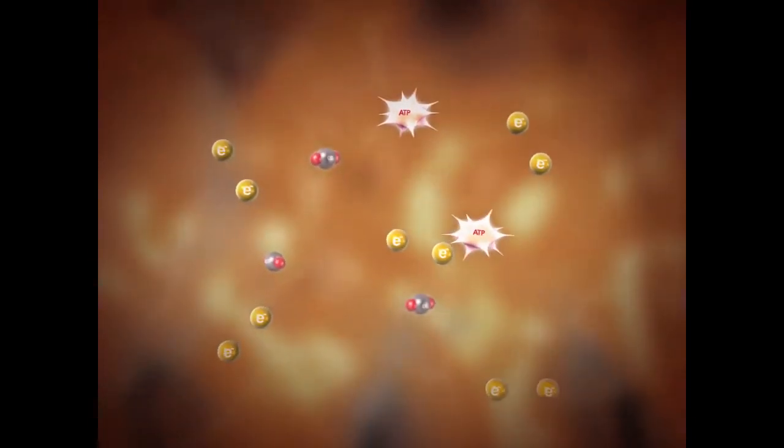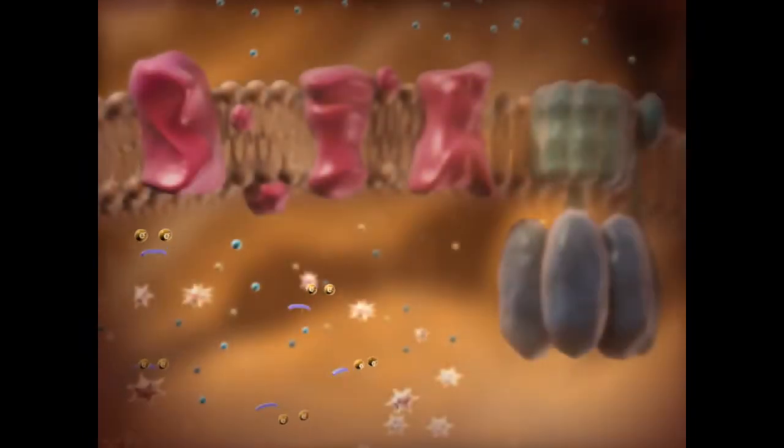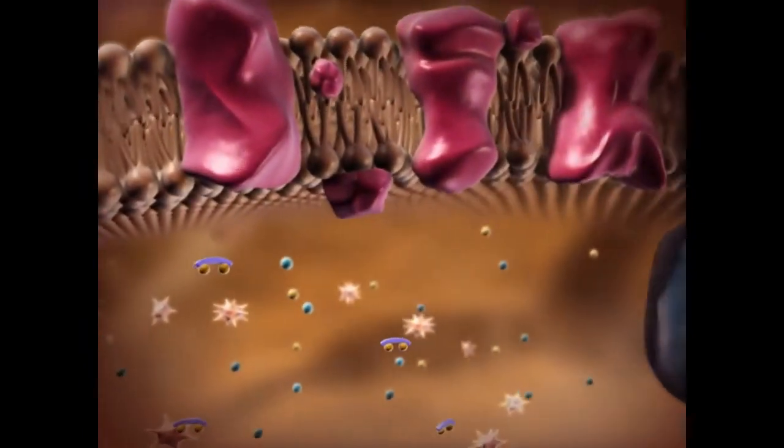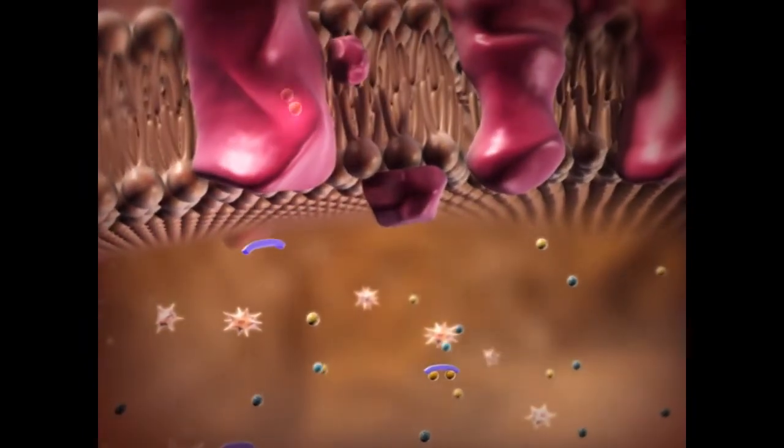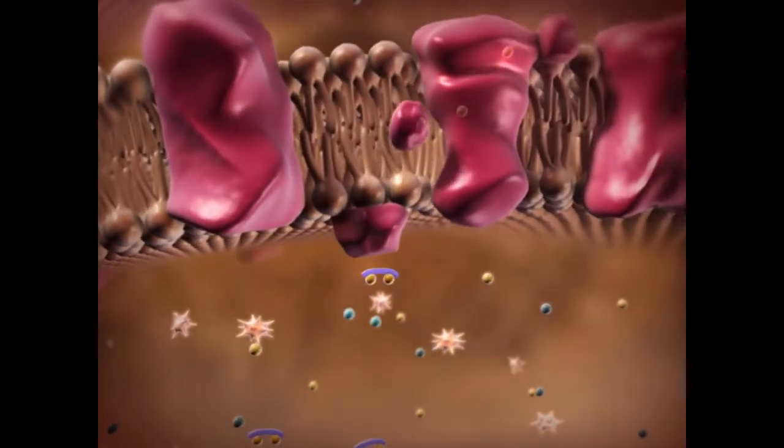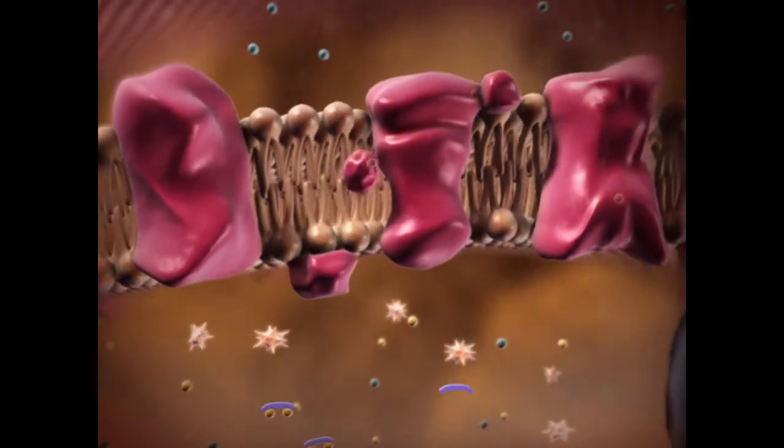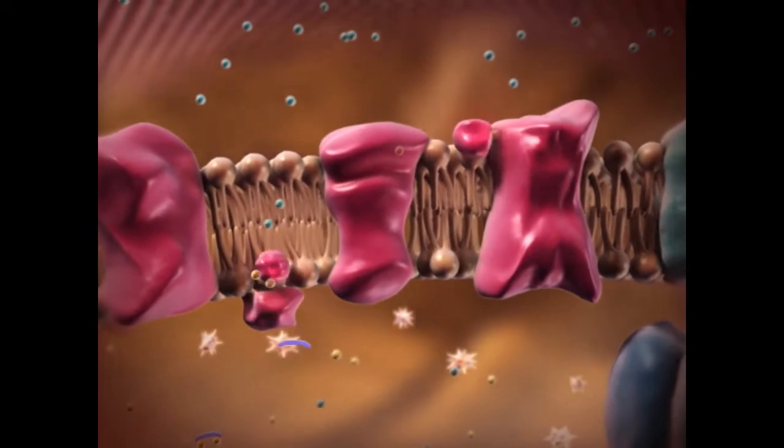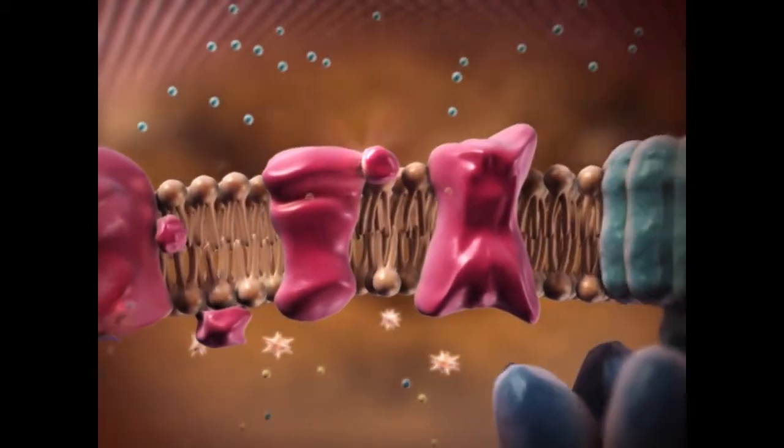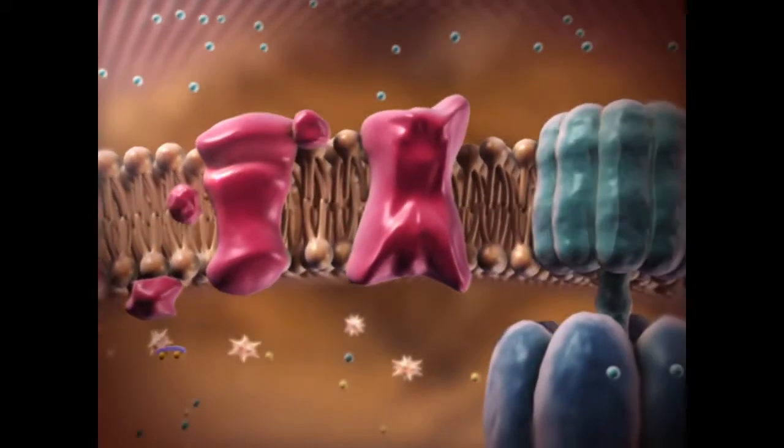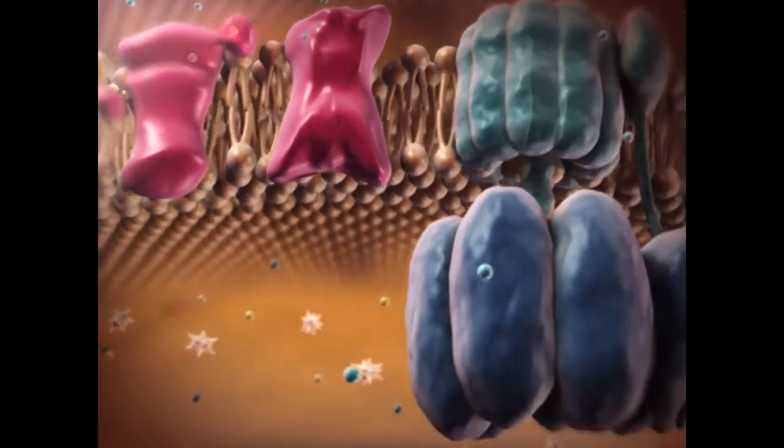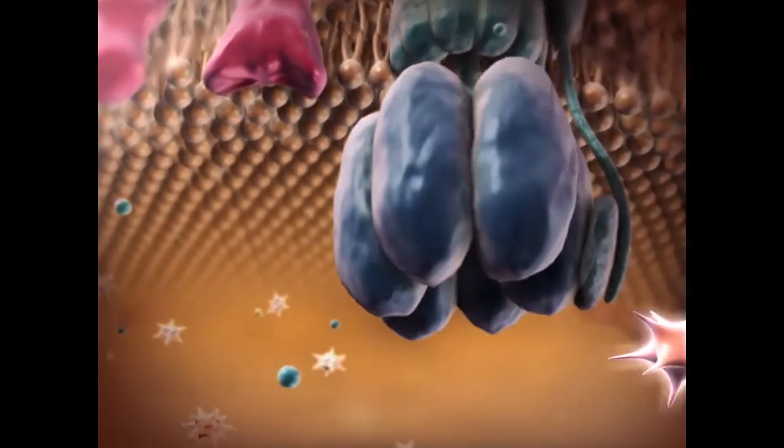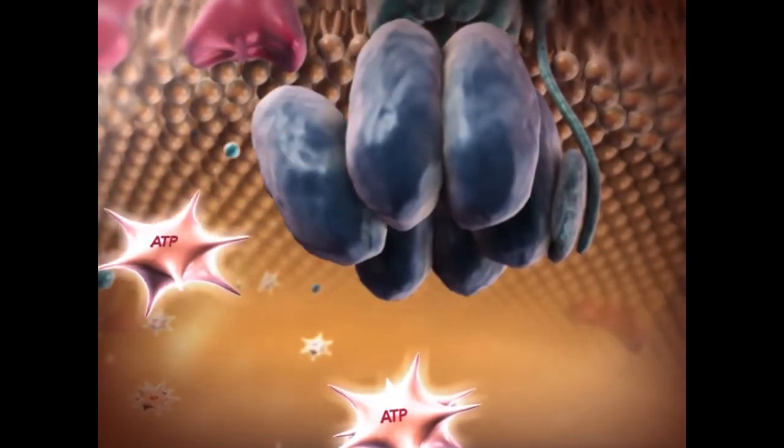High-energy electrons are again released. The third and final step, oxidative phosphorylation, involves the electron transport chain and chemiosmosis in the inner mitochondrial membrane. It is during this phase that most of the ATP molecules are created. The three steps of cellular respiration can produce up to 38 ATP molecules from one glucose molecule.